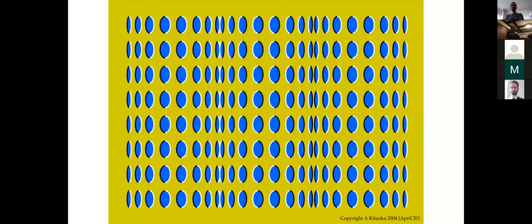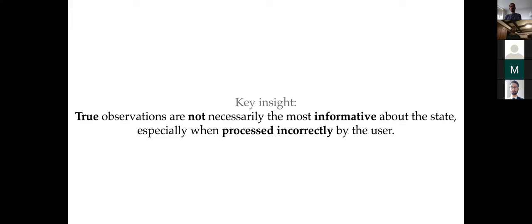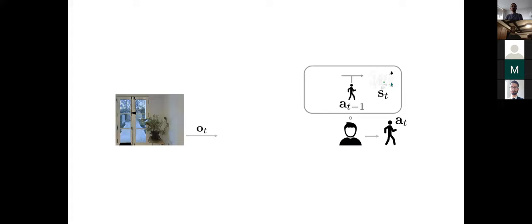Users can have trouble processing observations for a variety of reasons, like not being able to pay attention to many different sensors at the same time, or experiencing lens distortions that cause them to overestimate distances to obstacles. It could even be a more exotic effect like an optical illusion affecting the user's biological vision system. I love this roller illusion because it seems to be animated, but it's actually just a static image.